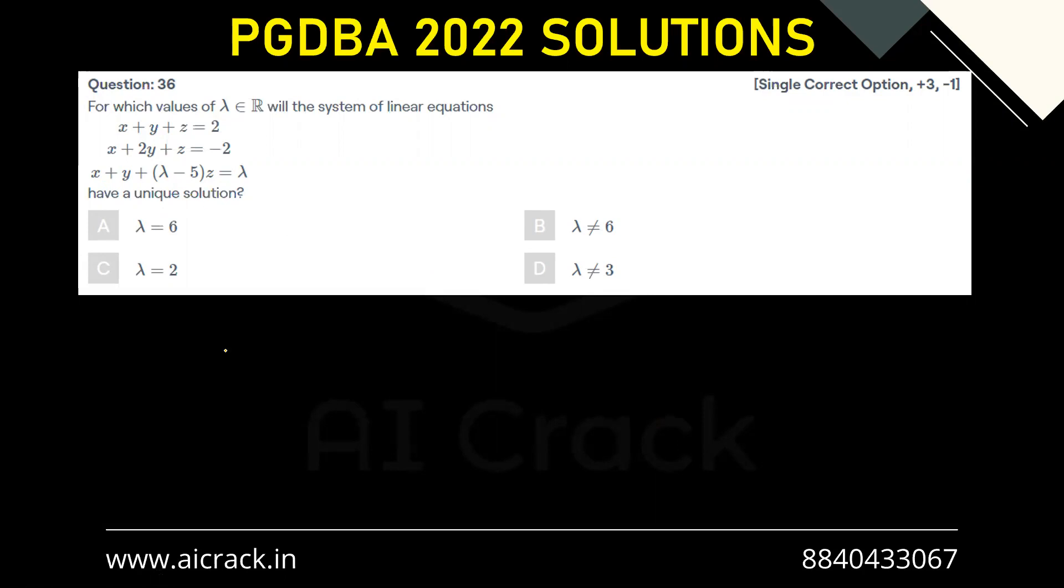In case of unique solution, we have the case where d is not equal to 0. So d1, d2, d3 can be anything, but d should not be equal to 0. So that's the case for unique solution.